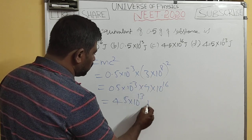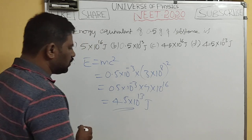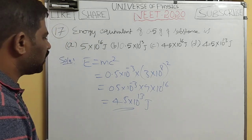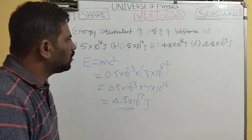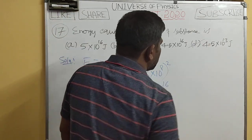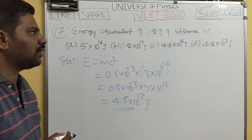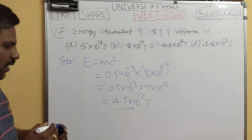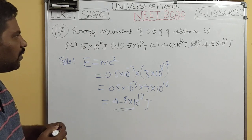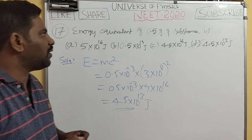So the right option for this question is option D: 4.5×10^13 joules, which is the energy equivalent of 0.5 grams of substance.